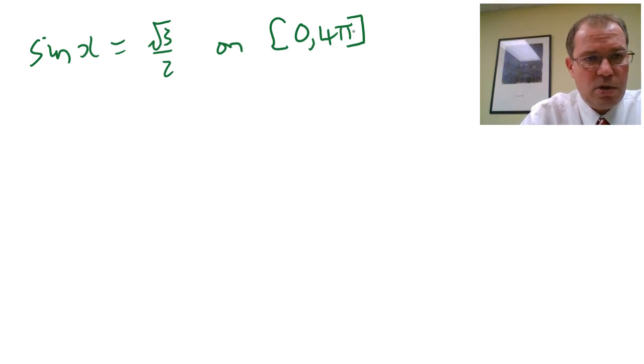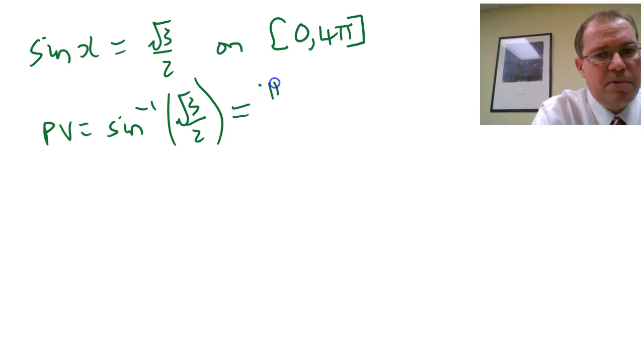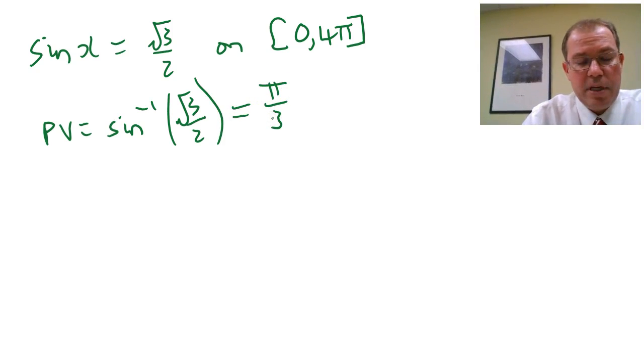So the first thing we need to talk about is we need to find the principal value. Now the principal value is the value your calculator gives you when you do sine inverse of root 3 over 2, and as we're in radians here the principal value would be π over 3.